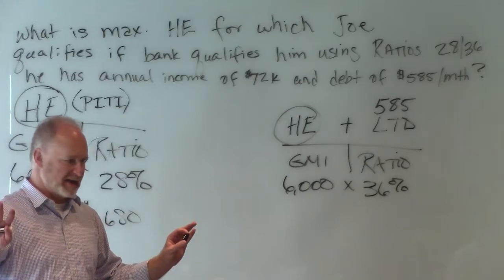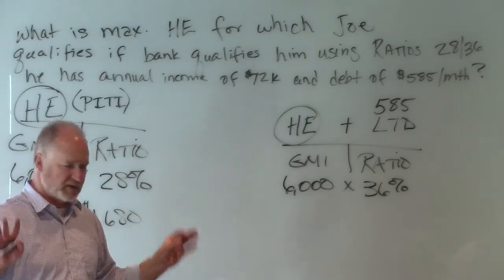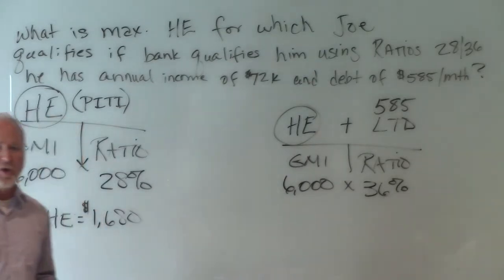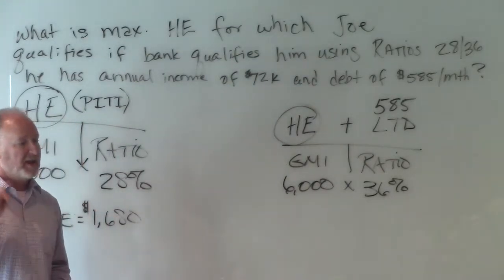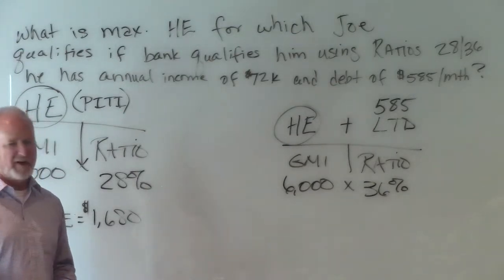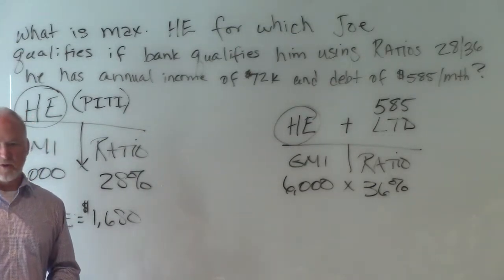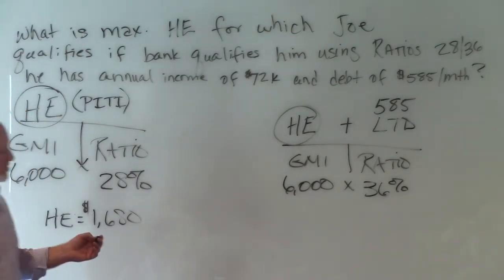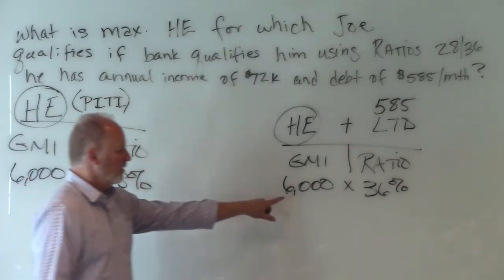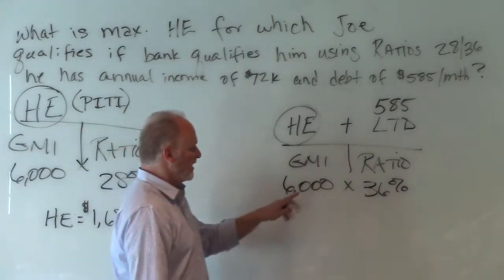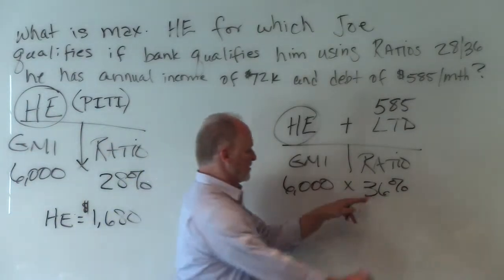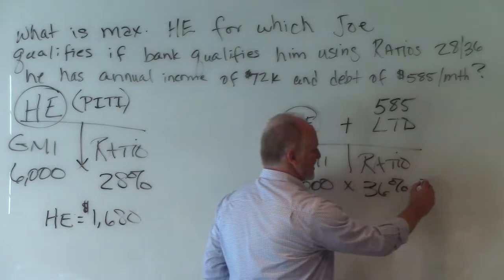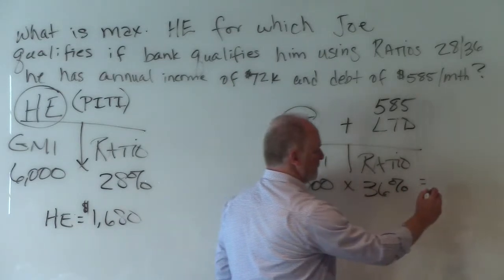We haven't even looked at his other debt yet. So before we give you an answer to this question, let's go look at how debt affects this as well. $6,000 times 36% is going to be $2,160.